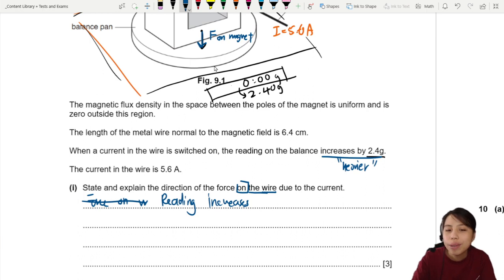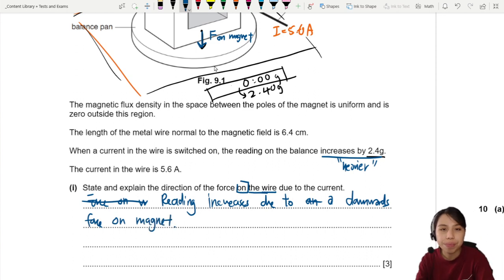Okay. So we say the reading increases. Why? Because of extra force downwards. So due to a downwards force. Best to specify force on magnet. It's a magnetic force, pushing it down.